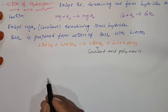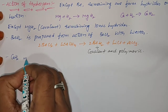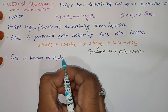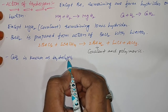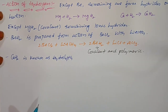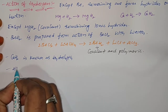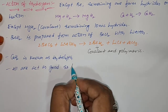Calcium hydride is also called hydrolith. All the hydrides react with water to form hydroxides, and they behave as strong reducing agents. All hydrides of 2A group elements act as good reducing agents and easily react with water to form hydroxides.